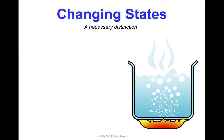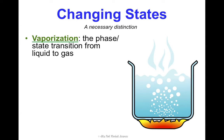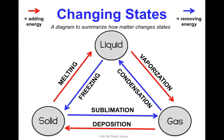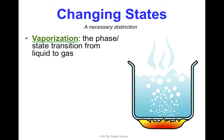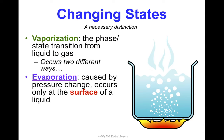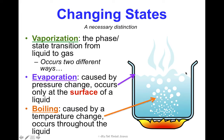Zooming in on vaporization — this is the phase transition from liquid to gas, and it occurs two different ways. Evaporation is caused by a pressure change and only happens at the surface. Boiling is what's happening throughout the entire liquid and is caused by a temperature change. Just make sure you know the distinction between those two words.